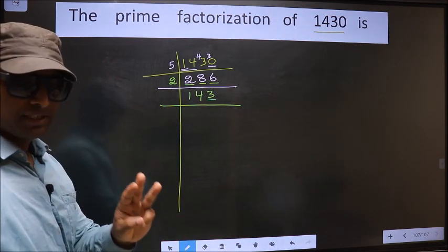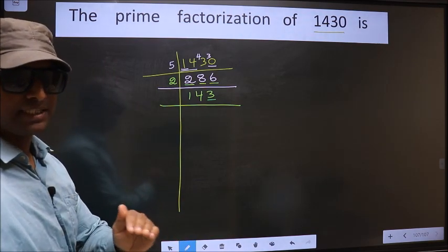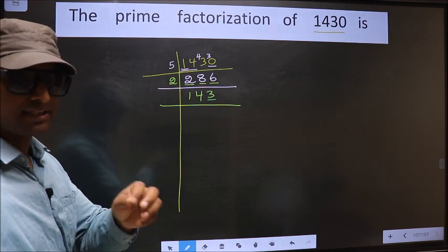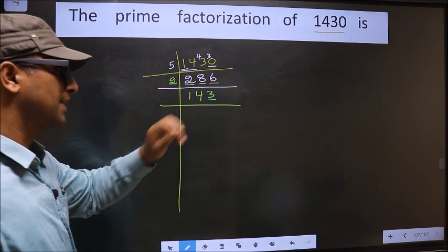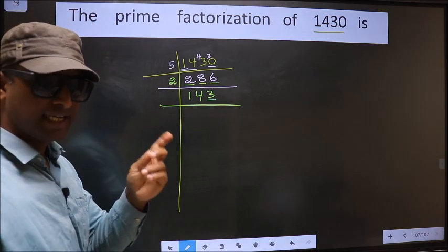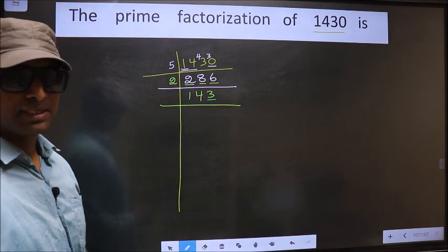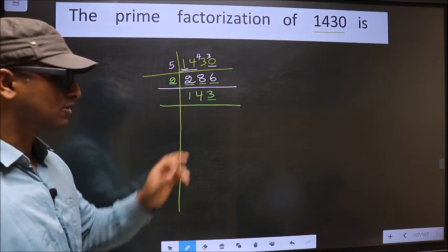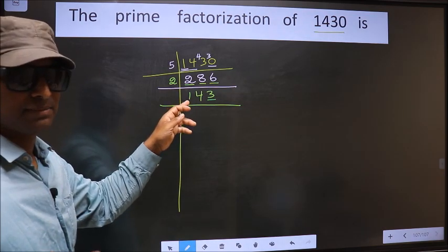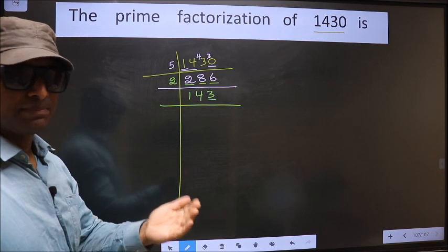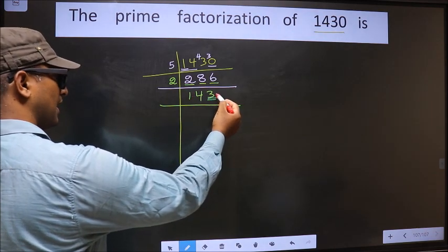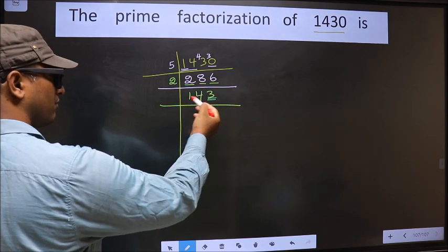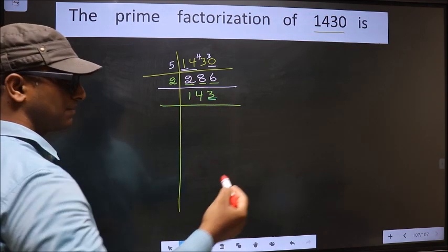Next prime number 3. To check divisibility by 3, for that we should add the digits. That is 1 plus 4 plus 3. We get 8. Is 8 divisible by 3? No. So this number also not divisible by 3. Next prime number 5. For this number, the last digit is neither 0 nor 5, so this number is not divisible by 5.